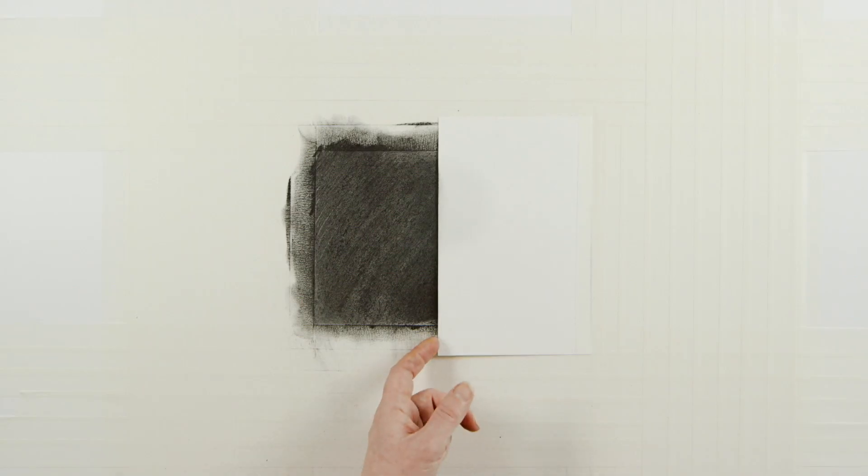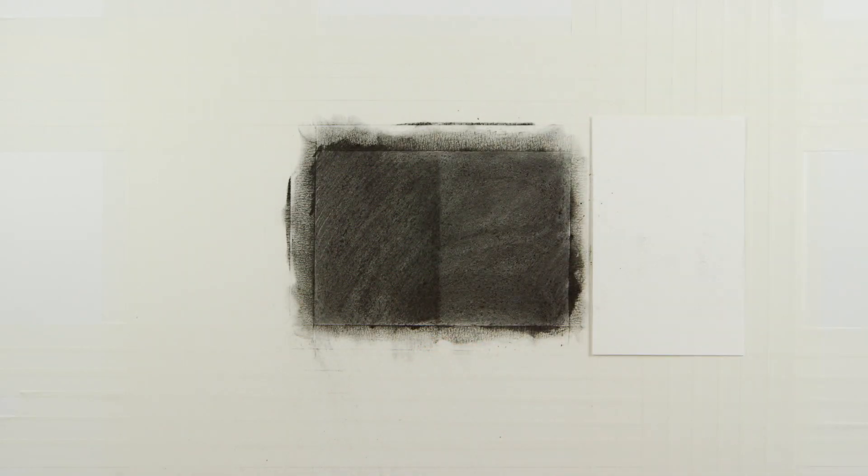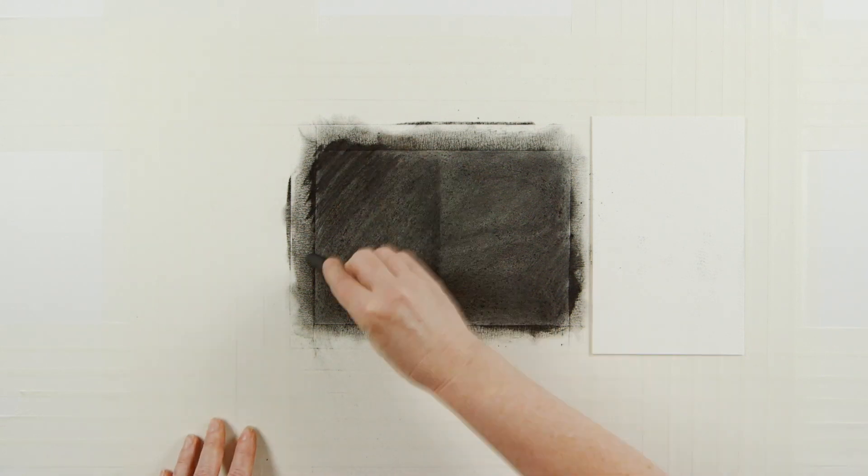I'm going to repeat this process of layering charcoal, masking, rubbing, and spraying to show you how fixative allows you to build up layers of density.